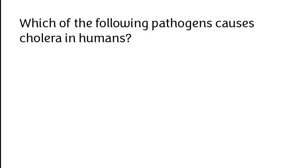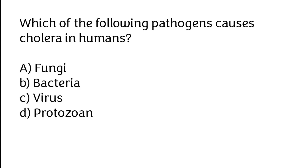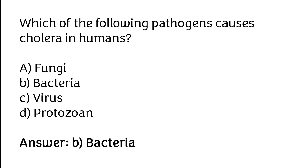Which of the following pathogens causes choluria in humans? A) Fungi, B) Bacteria, C) Virus, D) Protozoan. The correct answer is option B — bacteria pathogen causes choluria in humans.